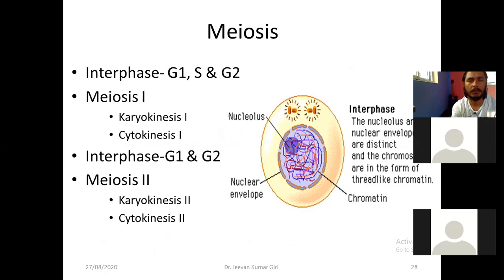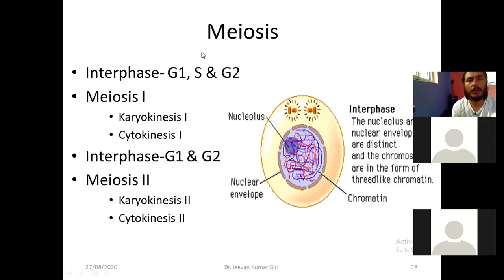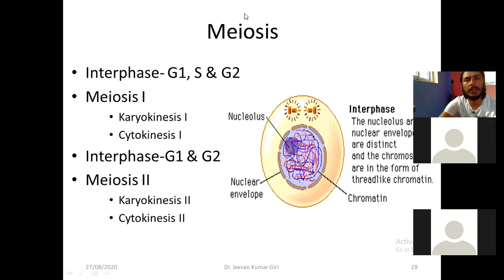We will say gamete cell. So meiotic division, that is meiosis, occurs in the gamete cell only. The single cell divides and finally gives four cells. Here it is different from mitotic cell division because the number of chromosomes in the daughter cell is reduced into half. So two N number in the mother cell, and finally four daughter cells are formed, and each daughter cell bears N number of chromosomes. So here the diploid cell divides and finally forms four haploid cells.